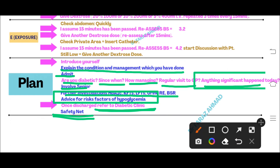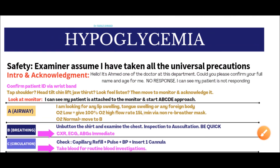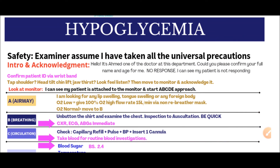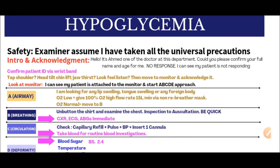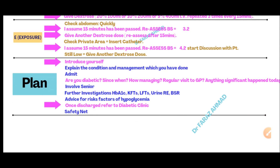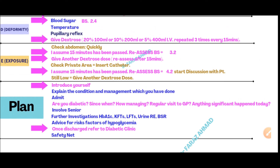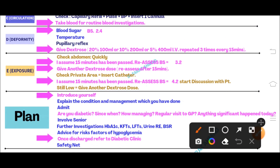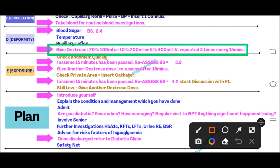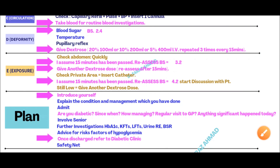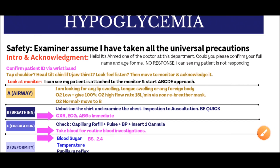Give the patient advice on the risks of hypoglycemia. Once the patient is ready for discharge, refer them to the diabetic clinic and provide safety netting. This is the best approach for the simulation station of hypoglycemia. Always verbalize your dextrose choice based on what is available in the exam. If you manage the hypoglycemia station in this way, you will get very good marks. Thank you very much.